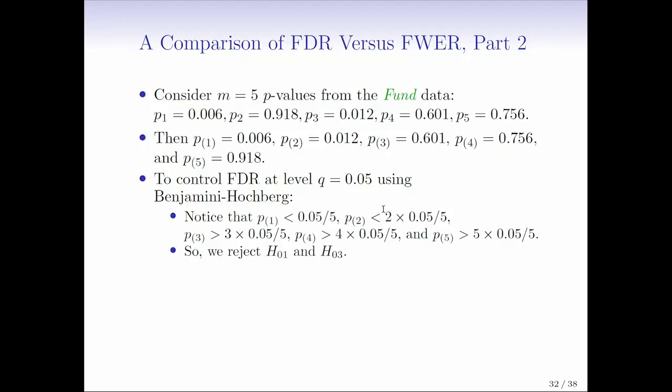And then we need to look for the largest index such that the P value is less than the threshold that we're comparing it to. And we see that for P1 and for P2, those P values are smaller than the threshold. But starting with the third smallest P value, the P values actually exceed the threshold. So that means that we can only reject the null hypothesis corresponding to the two smallest P values. And that corresponds to the first and the third manager. So we're going to reject the first and the third null hypothesis using Benjamini-Hochberg at level 0.05.